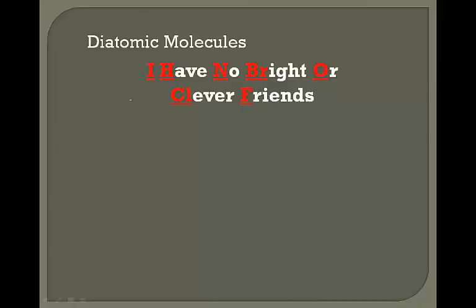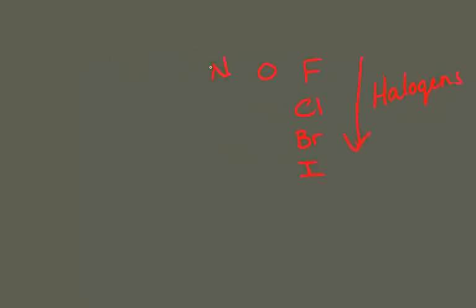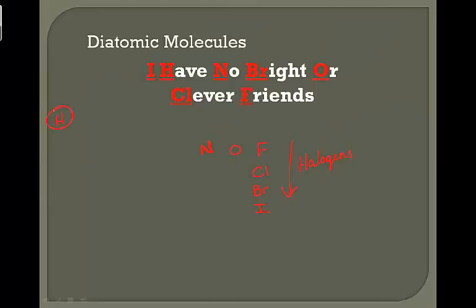and F for fluorine. Notice that fluorine, chlorine, bromine, and iodine are our halogens, then we have oxygen and nitrogen, and also hydrogen.